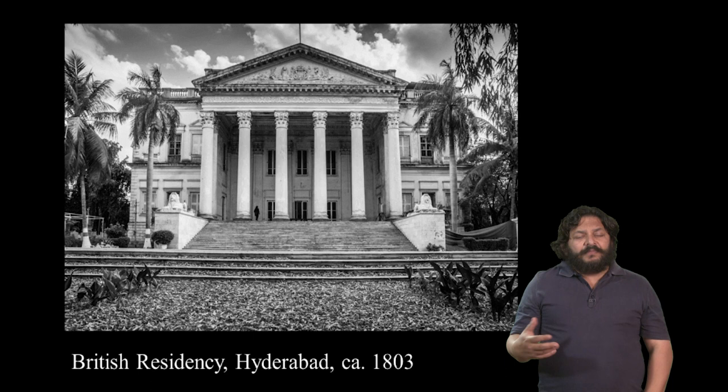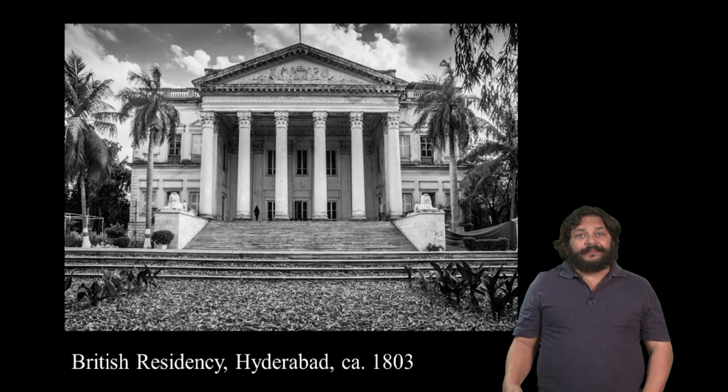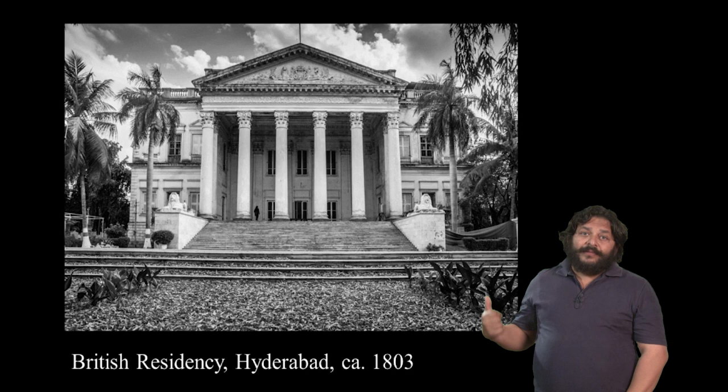The British when they first come to India patronized for themselves a purely neoclassical language of architecture, because neoclassicism was the rage in eighteenth century England. The buildings that they built in Calcutta or in other places like Bombay and Hyderabad conformed to this neoclassicism. In fact, in some parts of India as late as the early twentieth century, you see neoclassical architectural vocabulary being deployed.